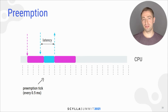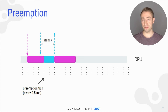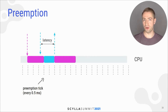However, this preemption in Scylla is cooperative, meaning that the task itself needs to check for preemption and yield on its own. This means that the whole code base and all algorithms have to cooperate and respect preemption under all conditions, which is hard to ensure.